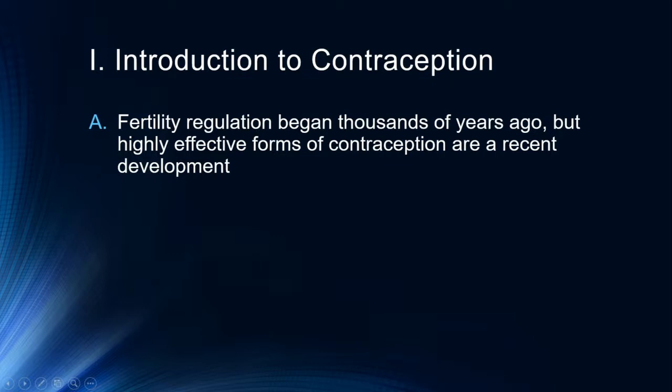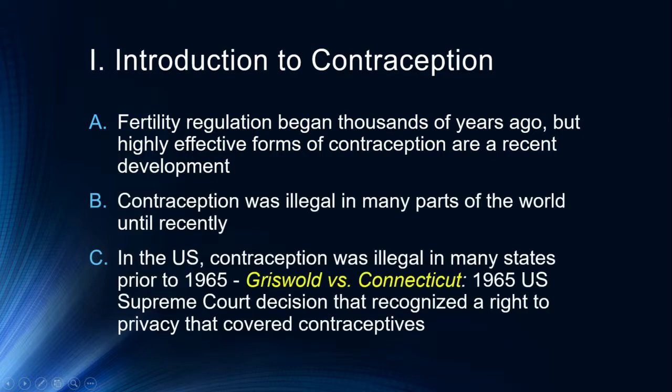A quick introduction: fertility regulation — that is trying to decide when to have children — is a thousand-year-old technology. Some of the oldest versions include things like lambskin condoms, which are still occasionally in use. Not particularly effective, but those kinds of barrier forms of contraception have been used in the past. Highly effective forms of contraception are a very recent development, and we'll talk about the efficacy rates of different kinds. Importantly, contraception was illegal in many parts of the world until relatively recently.